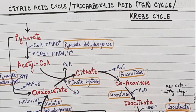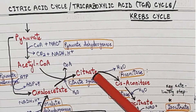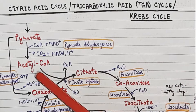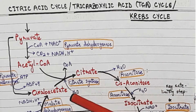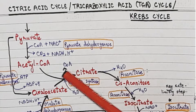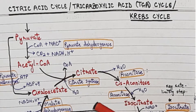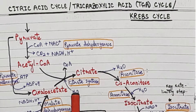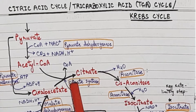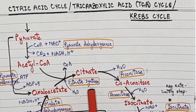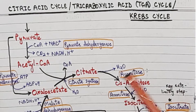The enzyme involved in converting pyruvate to Acetyl CoA is pyruvate dehydrogenase. Then Acetyl CoA combines with oxaloacetate to produce citrate. Water is added in this reaction. The enzyme responsible is citrate synthase — remember, 'citrate synthase' synthesizes citrate.